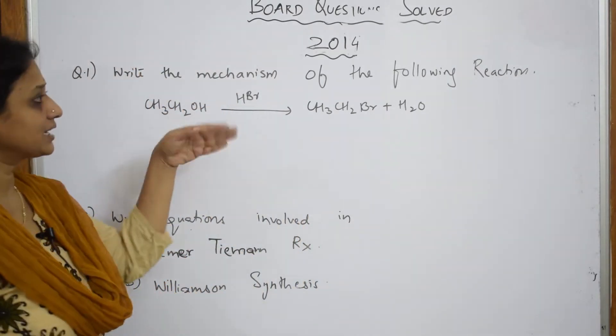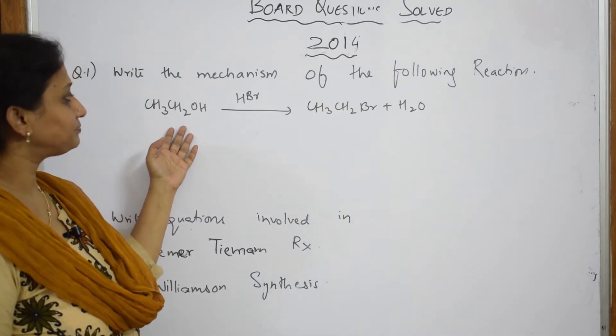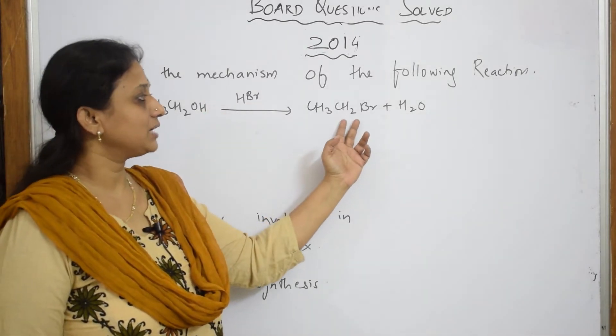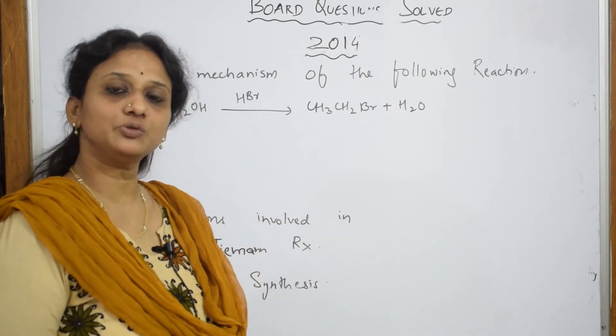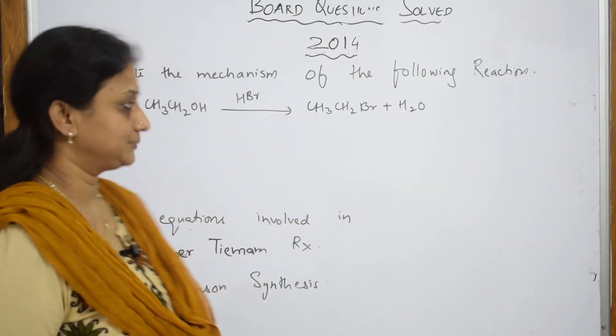They given write the mechanism of the following reaction. They have given you an ethanol and they are set in the presence of HBR. It is going to give you alkyl halide plus water. Already they have given you the reaction you are supposed to write the mechanism.